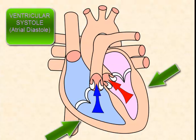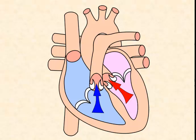In this image, the ventricles are contracting, so they are in systole. Blood is being pushed out of the heart, past the semilunar valves, to the lungs from the right side of the heart, and to the rest of the body from the left side of the heart. At this time, the atria are relaxed.